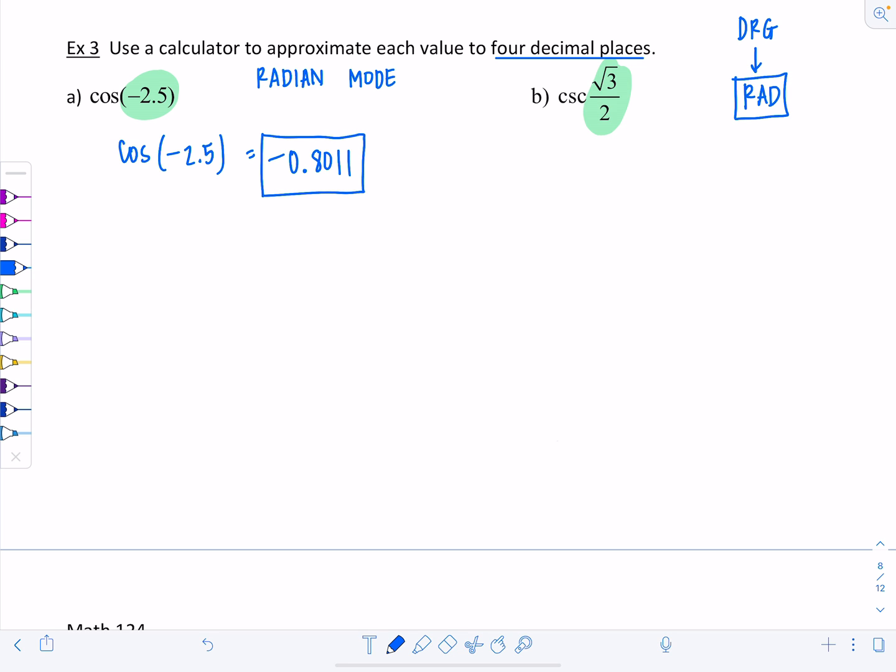One more, cosecant of rad 3 over 2. Remember cosecant is reciprocal function with sine. Punch in 1 divided by sine of rad 3 over 2. When you're punching this in your calculator, you have 1, hit divided by, then hit sine. It opens parentheses. Hit your radical key, it'll open more parentheses. Make sure you close them. Then divide by 2, and close it up again. You should get 1.312749. We're only rounding to four decimal places, so 1.3127.